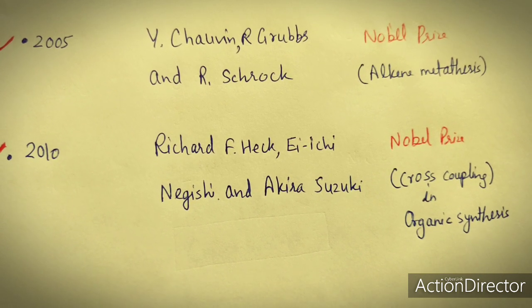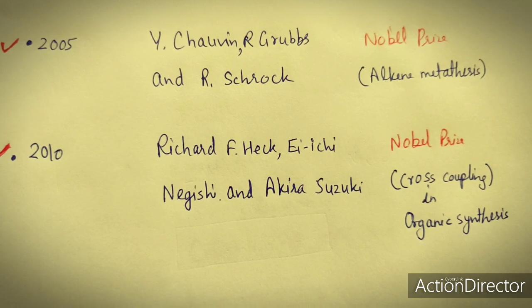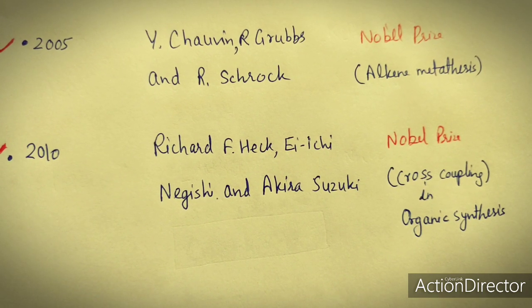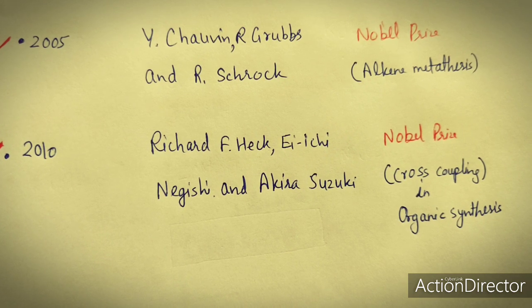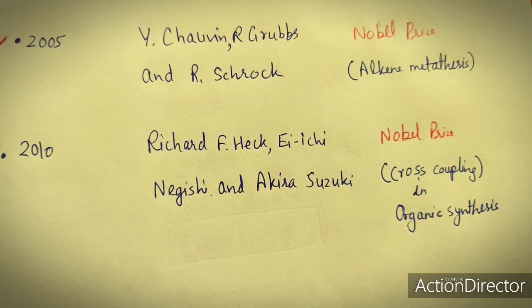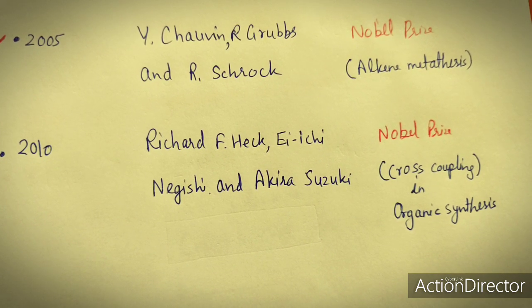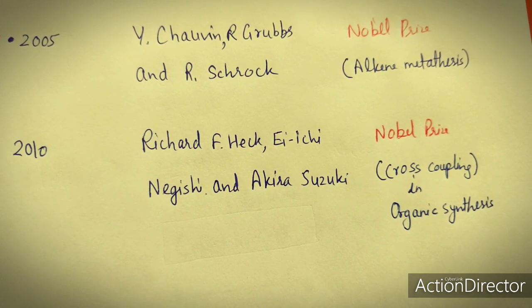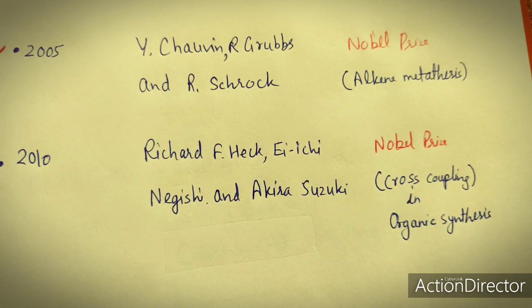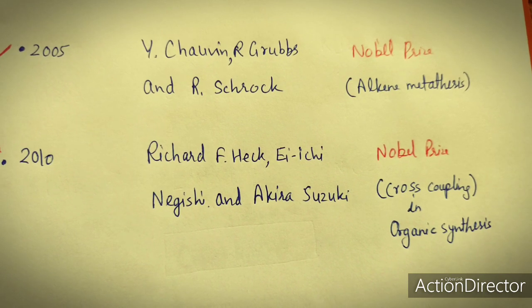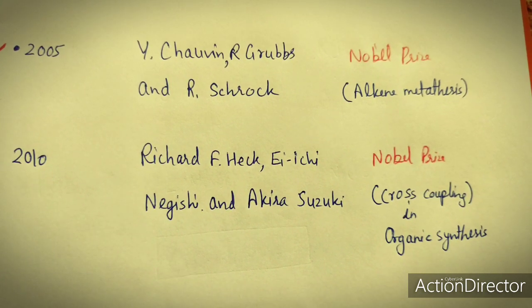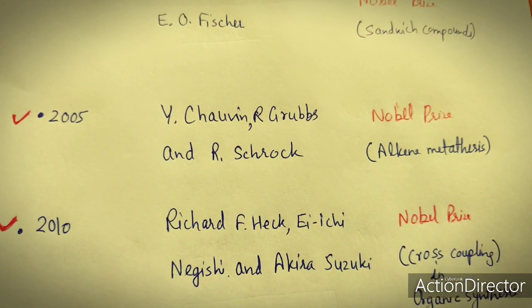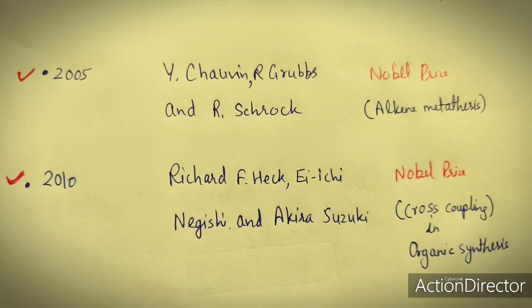So this is the history of organometallic compounds. They are very important due to their industrial importance and use in various organic synthesis processes. In total, there have been five Nobel prizes in organometallics: in 1912, 1963, 1973, 2005, and 2010.